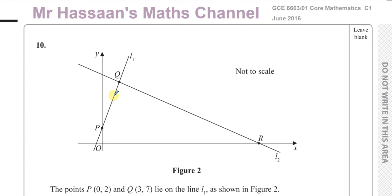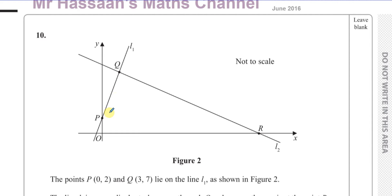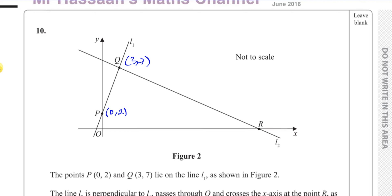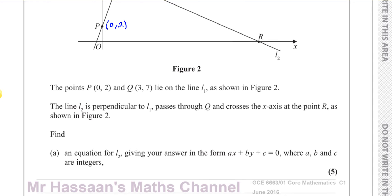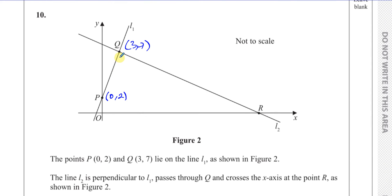The question tells us about the point P, which is (0, 2), and the point Q, which is (3, 7). They lie on line L1, as shown in figure 2. Line L2 is perpendicular to L1, passes through Q, and crosses the x-axis at the point R, as shown in figure 2. So these two lines are perpendicular — they cross at right angles.